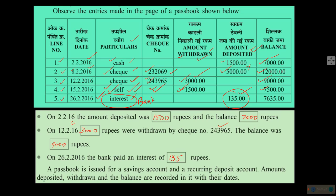Transactions are mainly of depositing amount into the bank and withdrawing amount from the bank. The particulars column shows how it was deposited or withdrawn, and the cheque number is given as a reference. The passbook is a very good mechanism by which we get a clear idea about everything happening in the bank in relation to your account. You can check a passbook from your parents, as to open a bank account you need to be above 18 years.